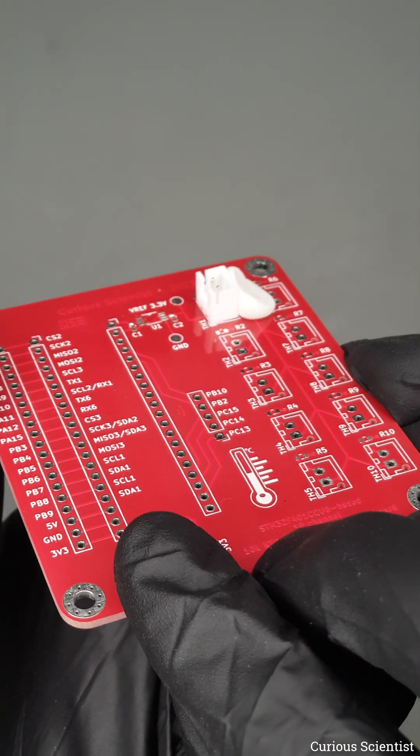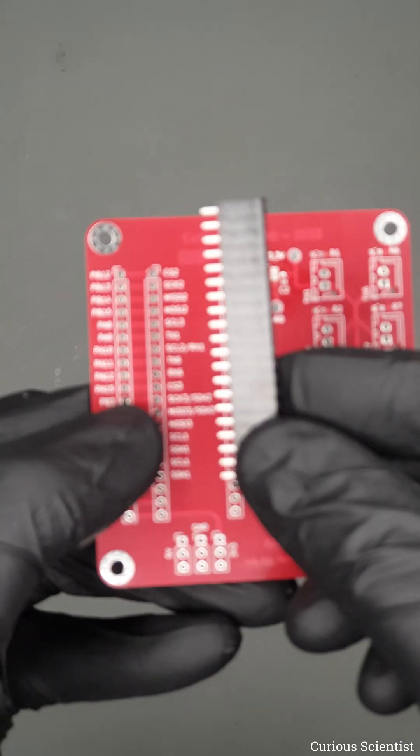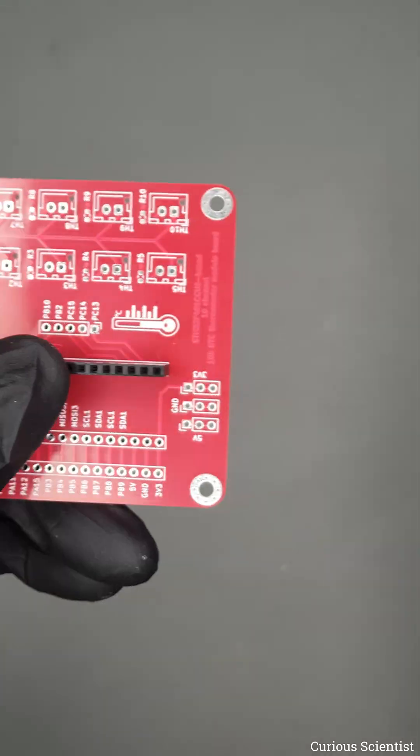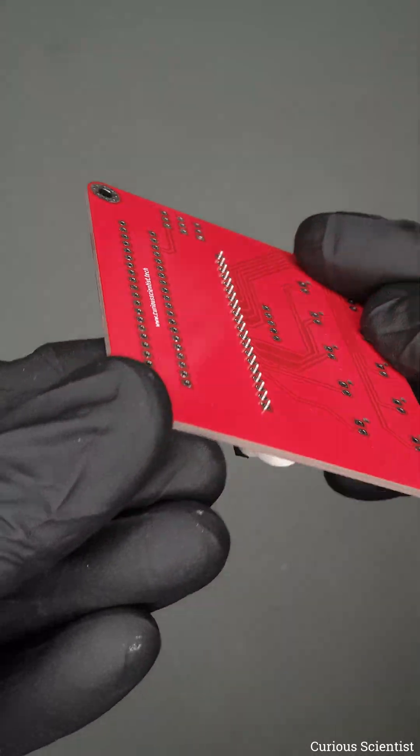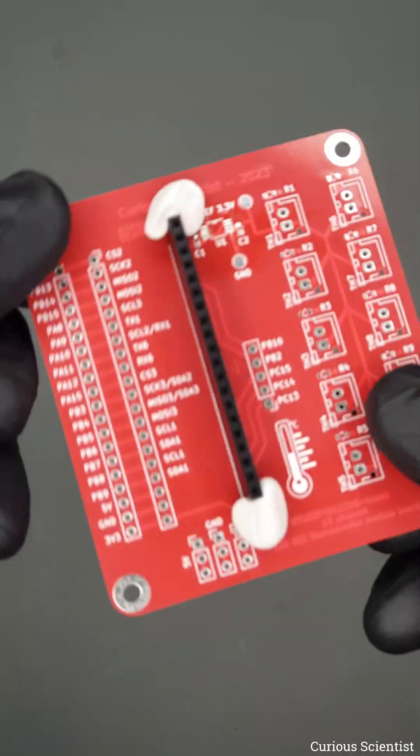The component stays in place and then it's easy to solder it. This putty works with even larger components. You just fix both ends of the large components, and then you can flip the board and solder the legs.